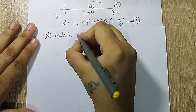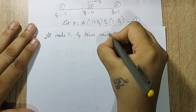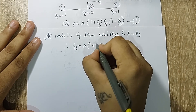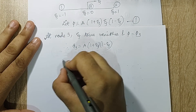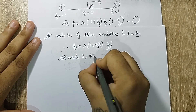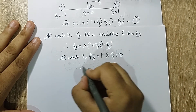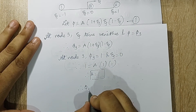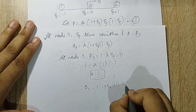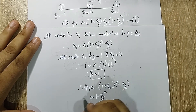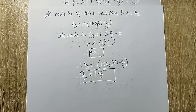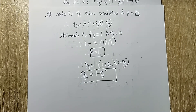At node 3, the ζ term vanishes and φ = φ₃, so φ₃ = a·(1 + ζ)·(1 - ζ). At node 3, φ₃ = 1 and ζ = 0, so 1 = a·1·1, giving a = 1. Therefore φ₃ = (1 + ζ)·(1 - ζ) = 1 - ζ². I hope you have understood the natural coordinate system and how to convert from rectangular to natural coordinates. In the next session we will see a numerical on this topic. Thank you.